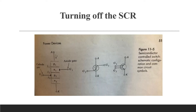Our next step is turning off the device by moving it from the forward conducting state to the forward blocking state. We applied a positive voltage at the base of the second NPN transistor, that is at P2, to turn it on. The turn-off process involves changing from the conducting state to the blocking state, accomplished by reducing the current below a critical level called the holding current.